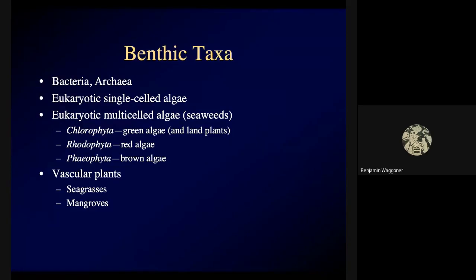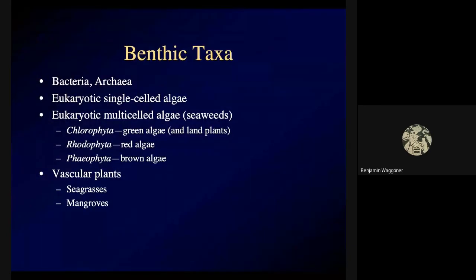Chlorophyta is green algae, and they also include the ancestors of land plants. Rhodophyta is red seaweeds, not that closely related to either one. Phaeophyta is brown algae — kelps and things like that.